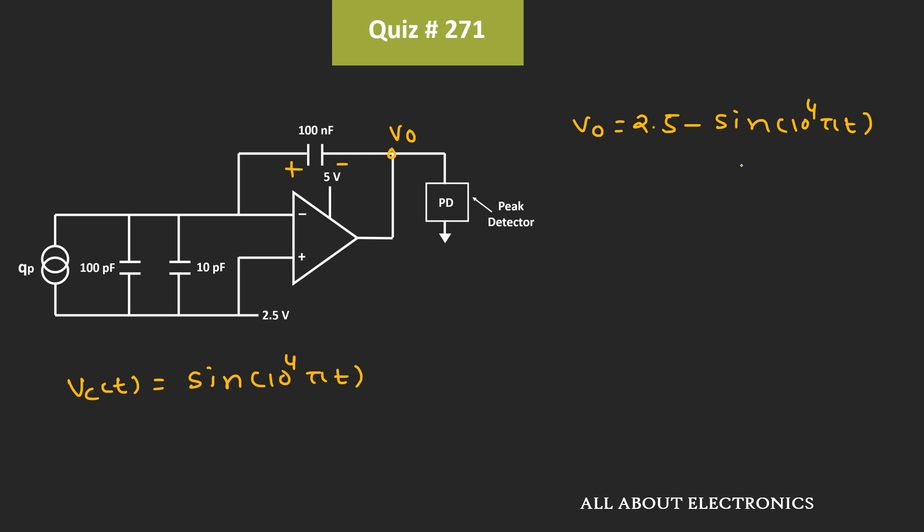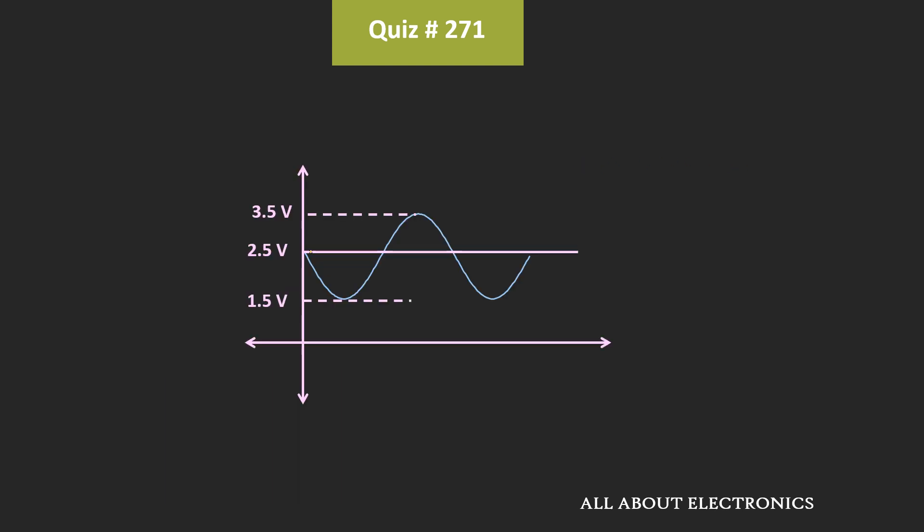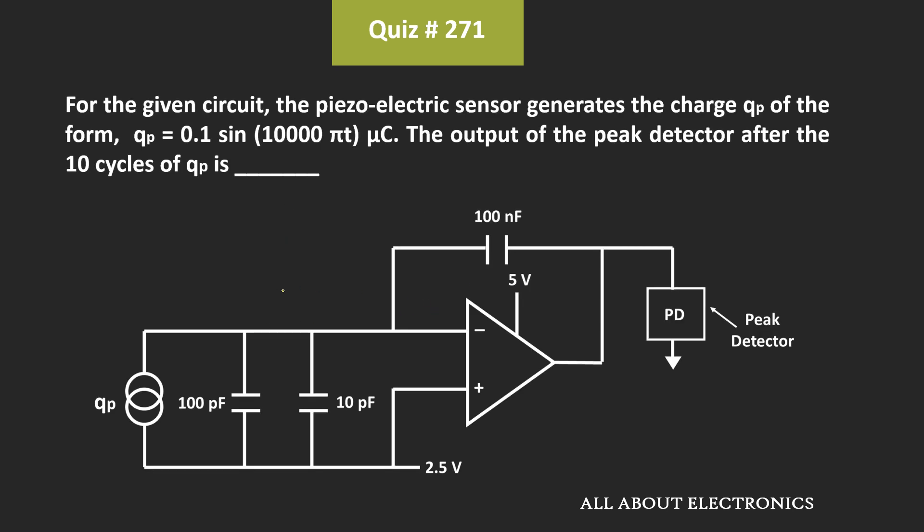Graphically if we see this output waveform, then it will look like this. And as we are aware, the peak detector detects the peak value. So in this case, the output voltage of the peak detector after the 10th charge cycle will be equal to 3.5V. That means for the given equation, the output of the peak detector after the 10th charge cycle will be equal to 3.5V.